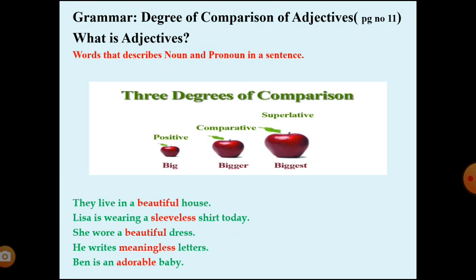Now we will see the three degrees of comparison. You can see in the picture an apple — different sizes of apples are shown. The first one is positive — 'big.' Then comparative, when we are talking about two — 'bigger.' And superlative, when we are talking about three or more than three.